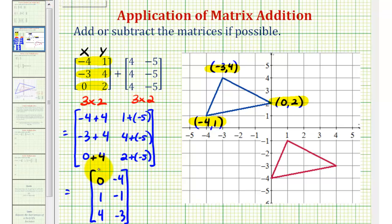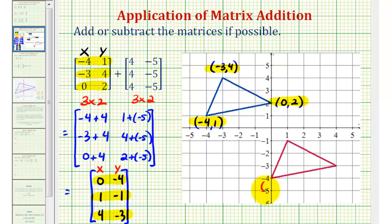Now if we think of the first column as the x coordinates and the second column as the y coordinates, each row will represent a vertex of the translated triangle. So we'd have the point zero negative four, one negative one, and four negative three.